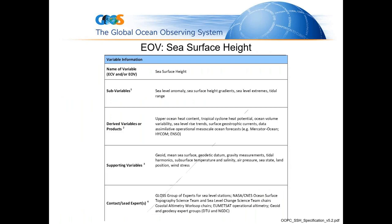Let's give one example of an essential ocean variable — sea surface height — and how the Global Ocean Observing System uses this variable. The name of the variable is sea surface height, but they associate other quantities to it. They have what they call a sub-variable, which would be sea surface height gradient. Then there are derived variables, such as upper ocean heat content. They also have supporting variables needed to support the measurement of sea surface height, such as a geoid, geodetic data, or a gravity measurement.